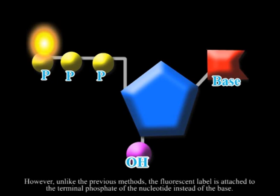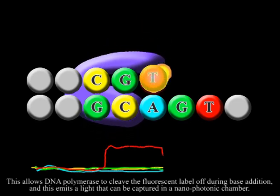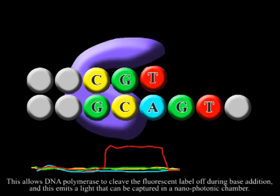However, unlike the previous methods, the fluorescent label is attached to the terminal phosphate of the nucleotide instead of the base. This allows DNA polymerase to cleave the fluorescent label off during base addition, and this emits a light that can be captured in a nano-photonic chamber.